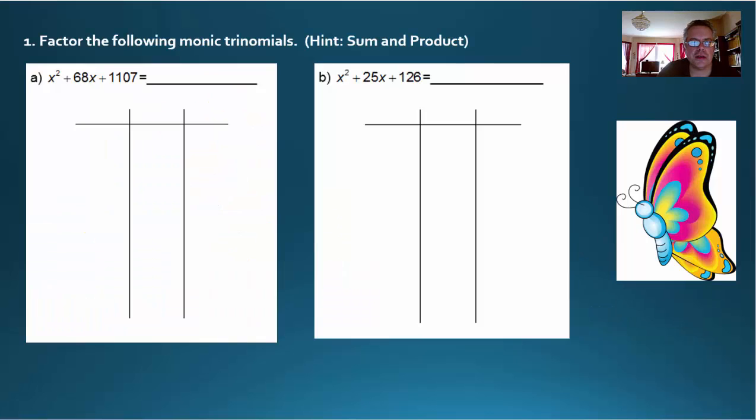Here's the first two examples. We want to factor these monic trinomials. Remember, monic means that the leading coefficient is one, the number multiplying x squared. So the secret to factoring a monic trinomial is to find two numbers whose sum is the coefficient of x, so whose sum is 68 in this case, and whose product is this number, the constant, 1,107.